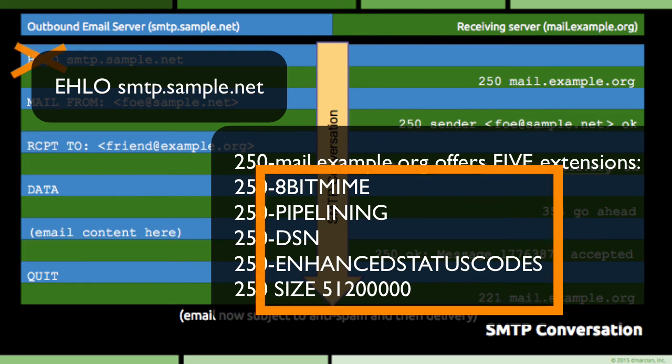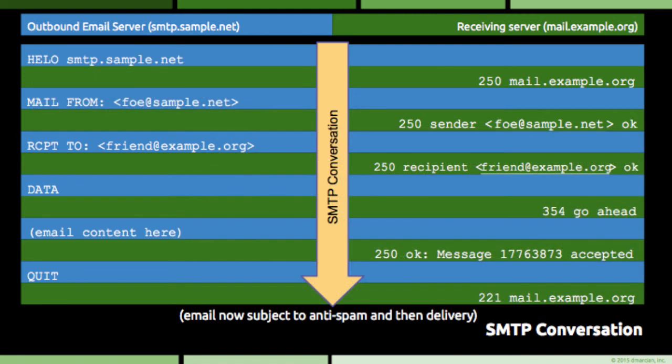Extensions to SMTP are added every once in a while, which keeps email fresh, but also turns the S part of SMTP into a bit of a joke. Back from the side note: the numeric code that the receiving server uses to say okay, go ahead, is 250.